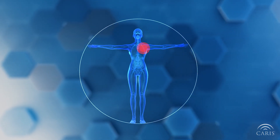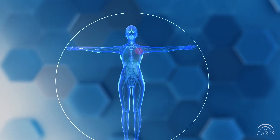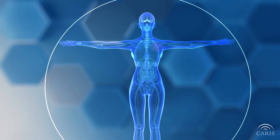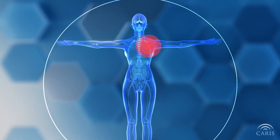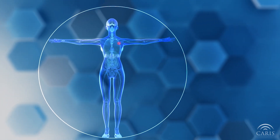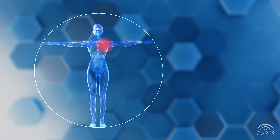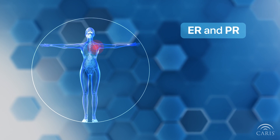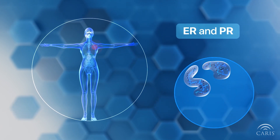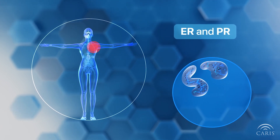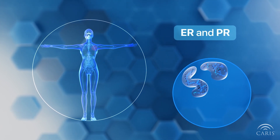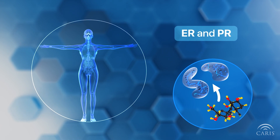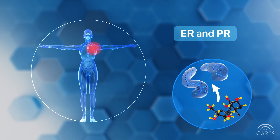A common example is found in breast cancer, which is divided into three major categories solely based on IHC results. ER/PR-positive breast cancer informs the oncologist that the tumor is sensitive to hormone therapies that act on the estrogen and progesterone receptors.